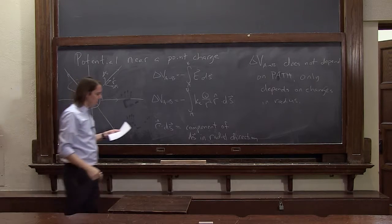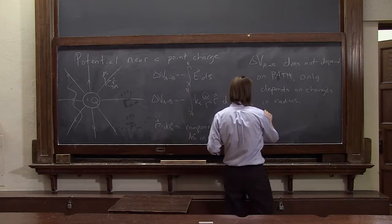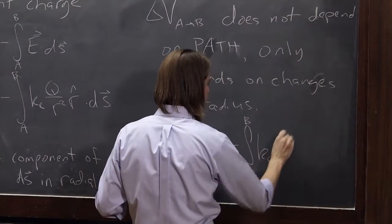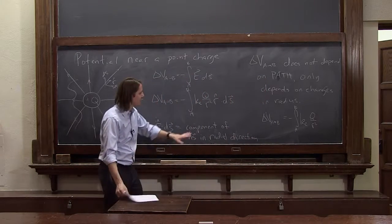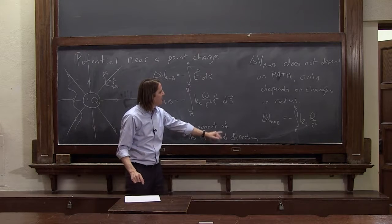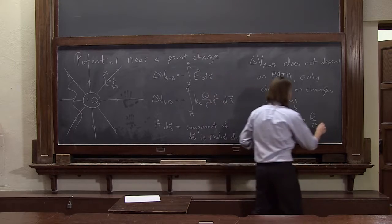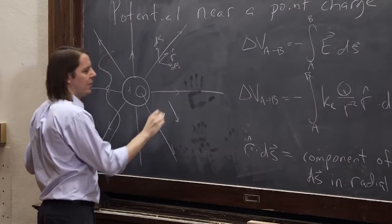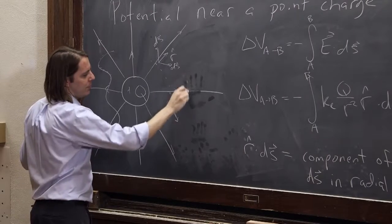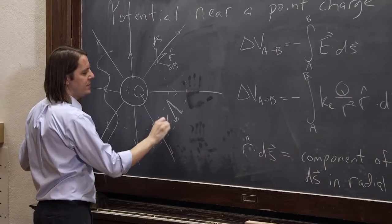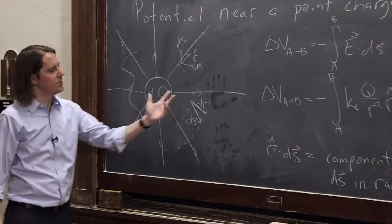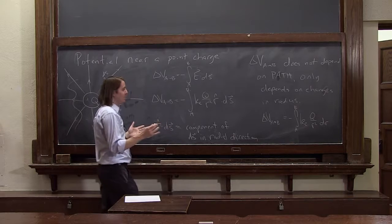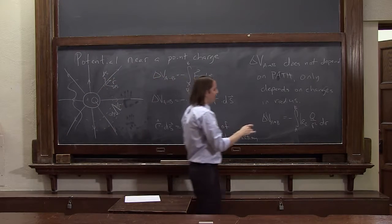So we can then write delta V from a to b as minus the integral from a to b of ke·q over r squared. We can take this dot product out, because it changes in the radial direction — the magnitude of r̂ is 1, and the step size ds in the radial direction you can just call dr. All that matters in a motion is, if this is my ds, how much did r change? r changed an amount dr. So to write it as a completely scalar equation — it is a scalar because this is a dot product — for a point charge you can just call it dr.